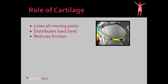First of all, let's talk about the role of cartilage. Cartilage lines all moving joints in our body. If we look at this diagram to the right, this is an MRI image of the knee taken from the side, or a sagittal projection. You can see the gray area is the bone of the femur, and this gray area is the bone of the tibia. The highlighted surfaces show the cartilage lining around the femur and the tibia. The purpose of the cartilage is to distribute the load — it can be thought of as a car tire. We don't run around in our cars on the rims; instead we have the rubber tire there to help distribute the load.